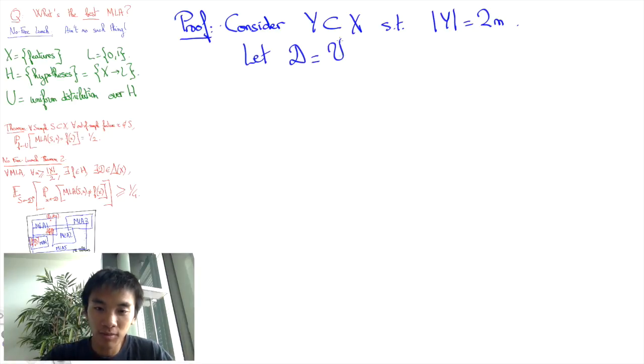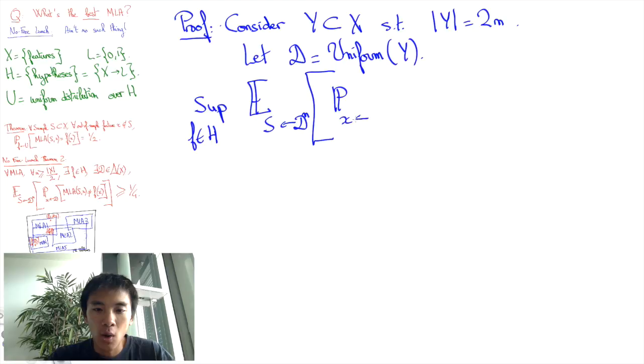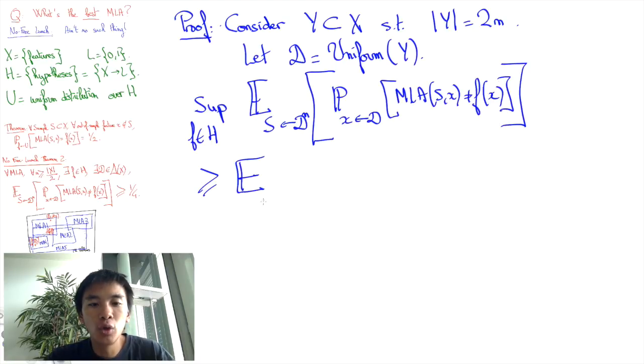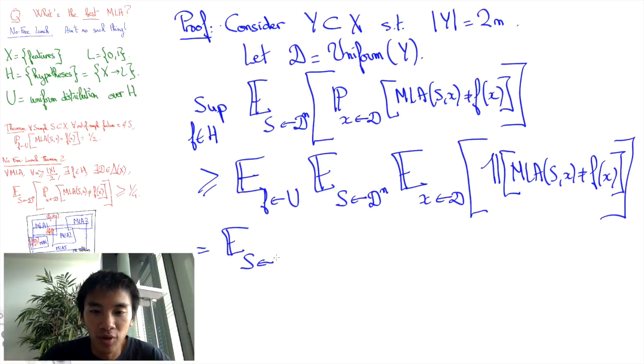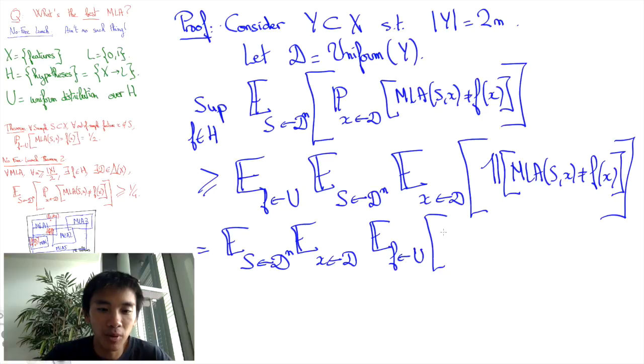And we're going to consider the uniform distribution D over the set Y. Let's first notice that the worst case is necessarily worse than the average case, where the prediction function is drawn uniformly randomly from the set of all prediction functions. But in this average case, we can invert the order in which the prediction function and the sample sets are chosen.